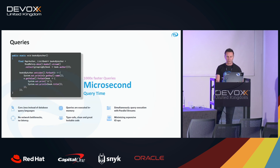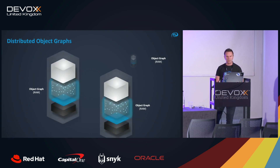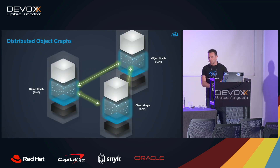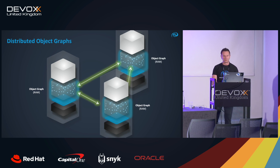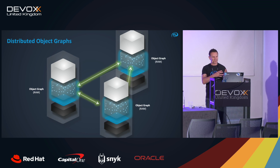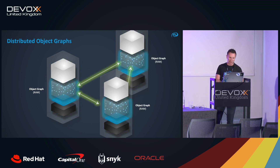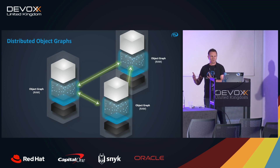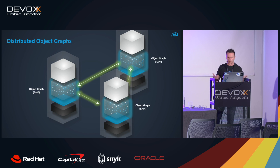We are currently working on object graph replication, and we expect to launch a MicroStream cluster in September. It will be possible to build distributed apps or microservices with MicroStream — you'll be able to keep your object graph in memory and replicate it across various MicroStream nodes. It's somewhat similar to Redis, but the main difference is we don't use any other data structure — we use plain Java object graphs.